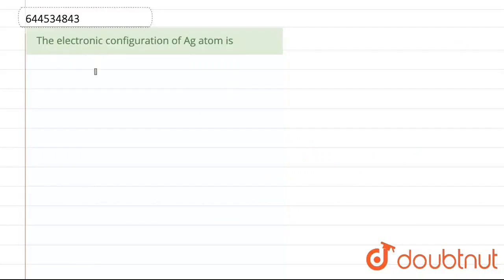Hello everyone, so the question is asking for the electronic configuration of Ag atom. If we write the electronic configuration for Ag, Ag is what? Ag is silver.